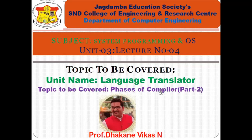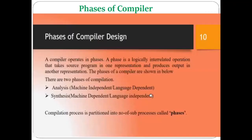In the previous lecture we already discussed the first phase of compiler — the lexical analyzer — in detail: how it processes your source program, how it generates tokens, and during the designing phase how the lexical analysis phase gets designed with the help of regular expressions and finite automata. A phase is a logically interrelated operation where each phase takes the program in one form and represents it as output in another form.